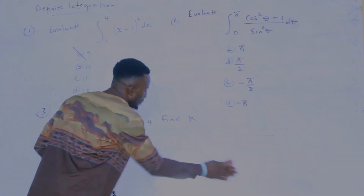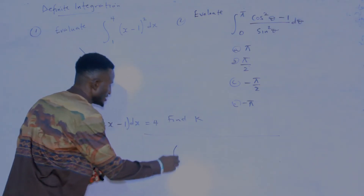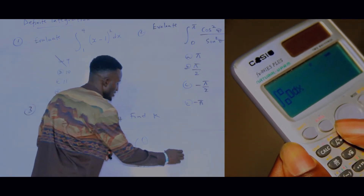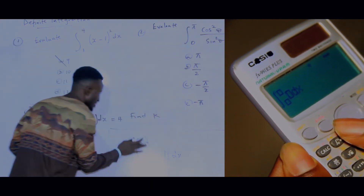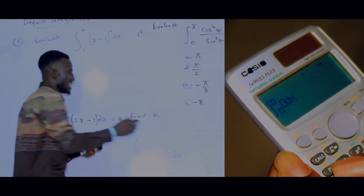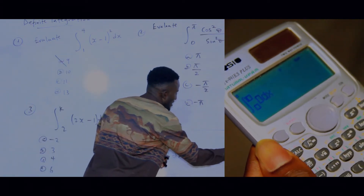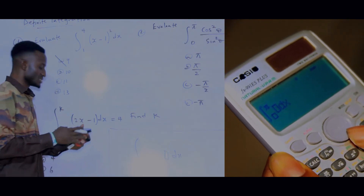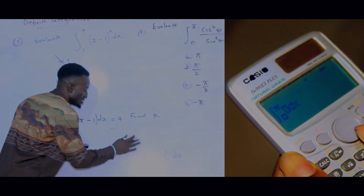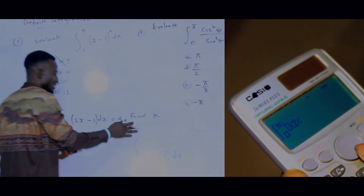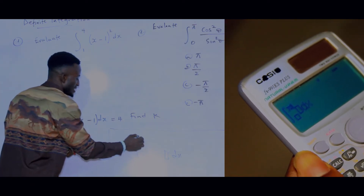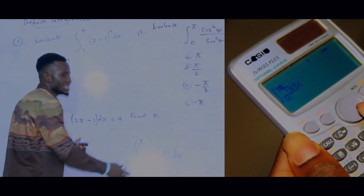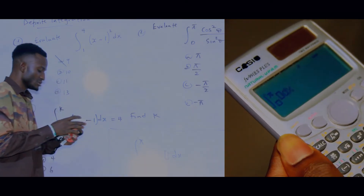For the second question, press the integration button again to get the template. The upper limit here is pi. To enter pi, press Shift and the button that says times 10 to the power x — that button is beside the Ans/equals button on your calculator. Press Shift and that button at the upper limit to get pi. For the lower limit, press zero.